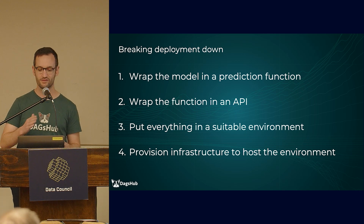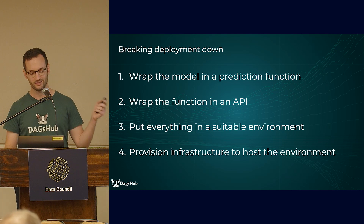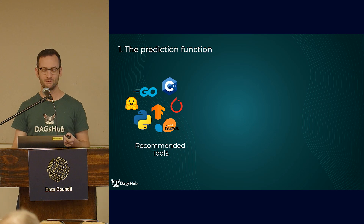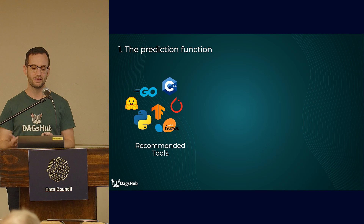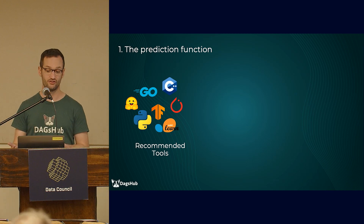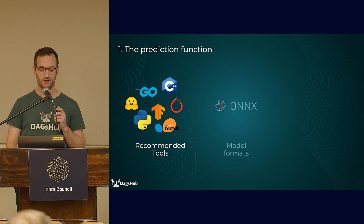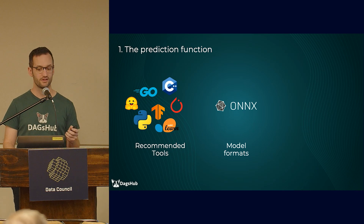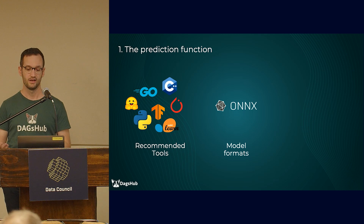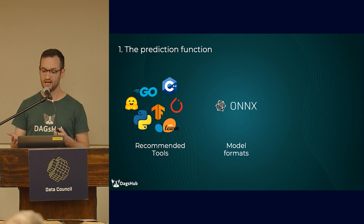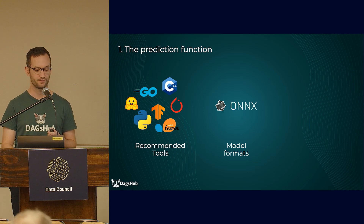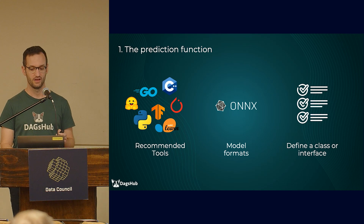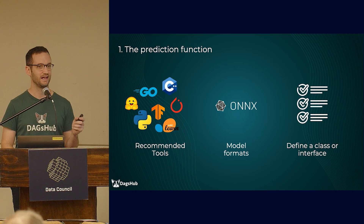Now that we have that laid out, let me go over a few recommendations for each step, including recommended tools. For step one, the correct choice is always the tools you're already familiar with, if possible — for most people this means Python, TensorFlow, PyTorch, or scikit. But you sometimes have additional constraints like the programming language required or support for GPUs, so it's important to take those into consideration. I'd also encourage you to think about model portability. If that's something you care about, you might want to look into portability-first formats like ONNX — especially important if you deploy to multiple types of endpoints. And it's worth spending time defining a company or team-wide class or interface for your model's prediction function. This will help with interoperability and automation as you grow.